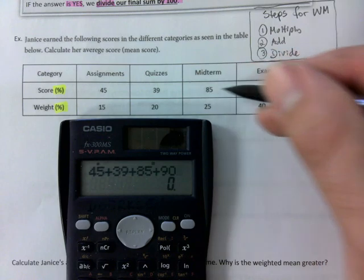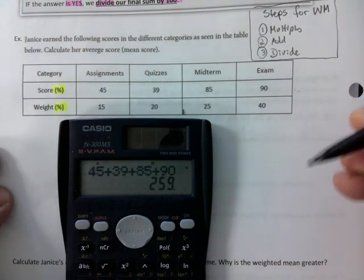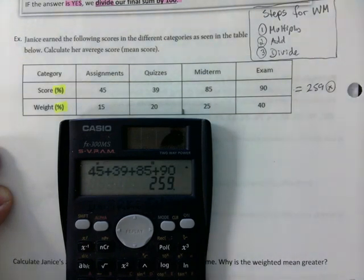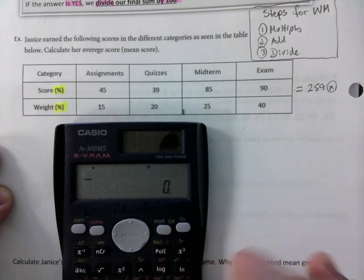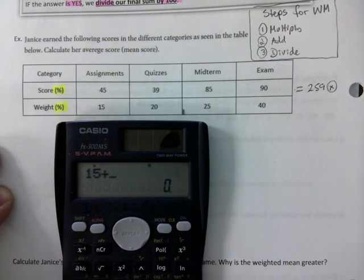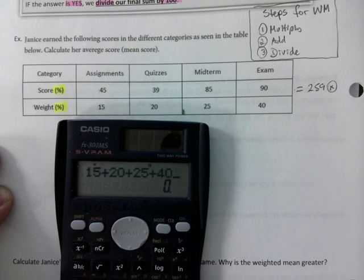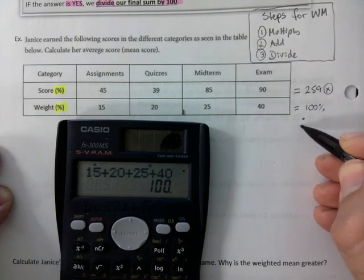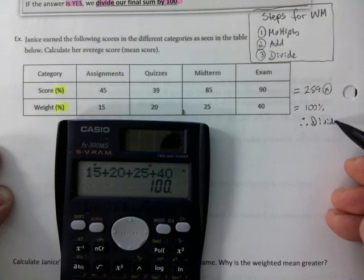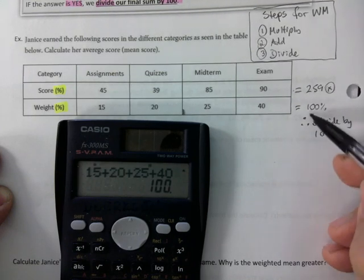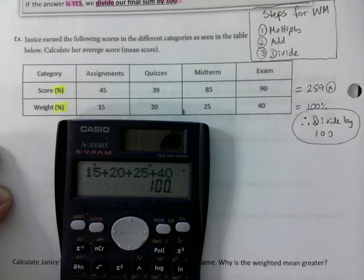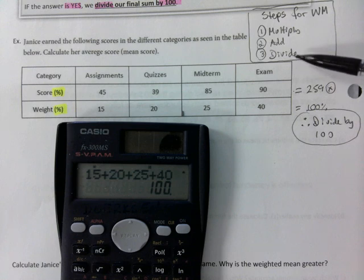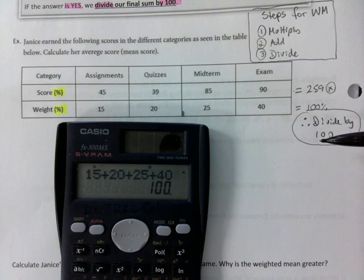I add up all the numbers at the top. And that gives me 259. That's 259. So far I don't have to divide by 100. Not needed. Let's check the second row here. 15 plus 20 plus 25 plus 40. That does add up to 100. 100%. Therefore, divide by 100. Just write that down for now. So when it comes to the third step here, which says divide, we know we're going to have to divide by 100.